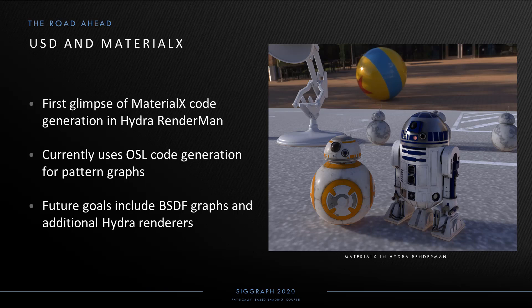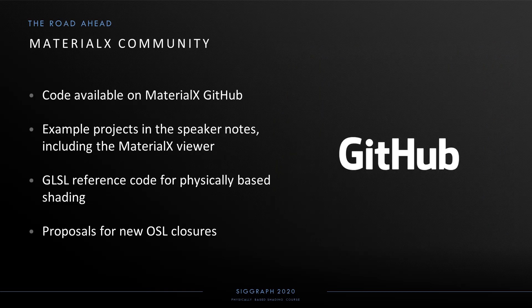In this initial prototype, code generation is only used for pattern graphs, but Pixar ultimately plans to extend this work to physically-based shading graphs and additional Hydra renderers such as Storm. The code is all available on the MaterialX GitHub, and we greatly welcome contributions from the community. A particularly good starting point is the MaterialX Viewer, which uses GLSL code generation for its real-time viewport and supports the full set of physically-based shading nodes. On the OSL side, we're interested in proposing additional closures that would complete its support for the MaterialX physically-based shading nodes.